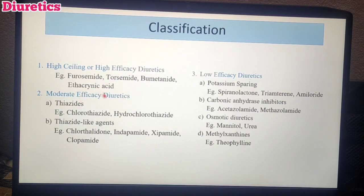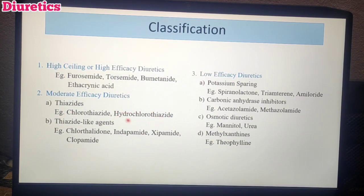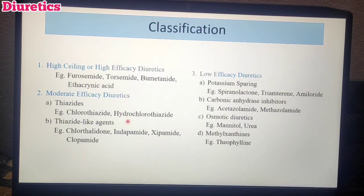Next, second category: Moderate Efficacy Diuretics. The effect is moderate — High Ceiling has high efficacy. If you look at these two subcategories — one is Thiazides. Chlorothiazide is a pioneer drug, and recently Hydrochlorothiazide has been developed. We use Hydrochlorothiazide in many antihypertensive drug combinations. For example, Telmisartan combined with hydrochlorothiazide, and Captopril combined with hydrochlorothiazide.